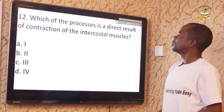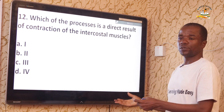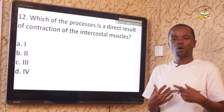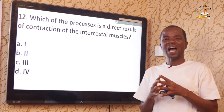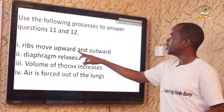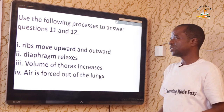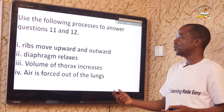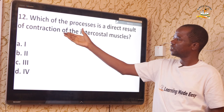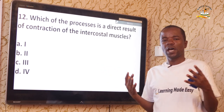Question 12: Which process is a direct result of contraction of intercostal muscles? During inspiration, when intercostal muscles contract, the ribs move upward and outward. That is a direct consequence of intercostal muscle contraction — Roman numeral I. The correct answer is option A.